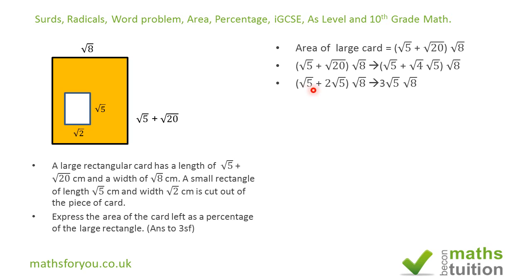If we call √5 as x, then we have x + 2x in the bracket. Since x + 2x = 3x, the expression inside the brackets reduces to 3√5, and then we multiply by √8.